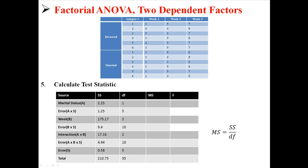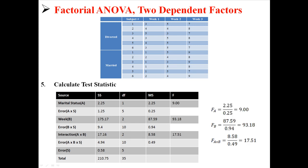Now we find mean squares, which is just sum of squares divided by degrees of freedom for each source. For marital status, 2.25 ÷ 1 = 2.25, and so on across all terms. Then we calculate our three F-statistics by dividing the MS of each effect by its associated error MS. For A: 2.25 ÷ 0.25 = 9. For B: 87.59 ÷ 0.94 = 93.18. For the interaction: 8.58 ÷ 0.49 = 17.51.